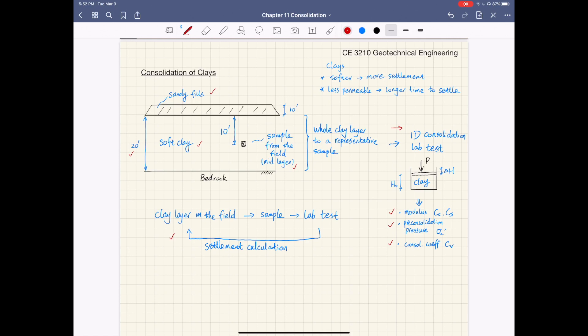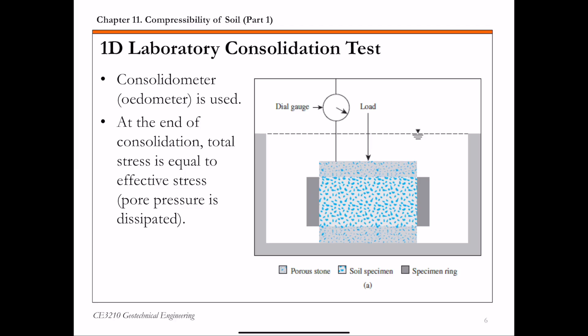So basically the assumption here is that this representative sample you take from this mid layer, its characteristic is going to represent what's going to happen to the soft clay layer when it is loaded in the field.